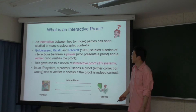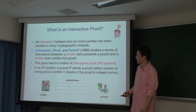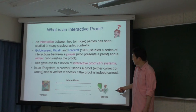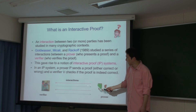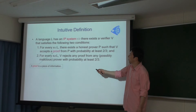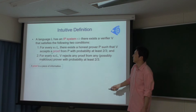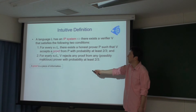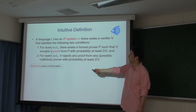インタラクティブプルーフシステムの話になります。プルーバーとベリファイヤーの間の通信をインタラクションといい、これを何回も繰り返して最終的にある条件を満たすようにします。このシステムはGoldwasser、Micali、Rackoffが1989年に提案しました。IPシステムが言語Lを認識するというのは、ベリファイヤー（多項式時間のアルゴリズム）が存在して条件を満たすということです。